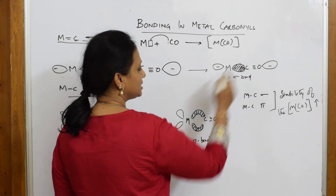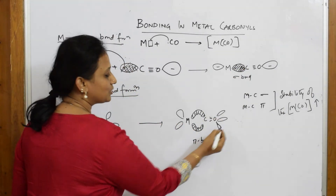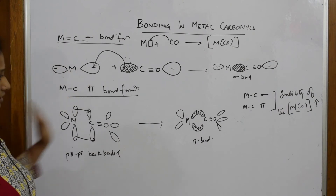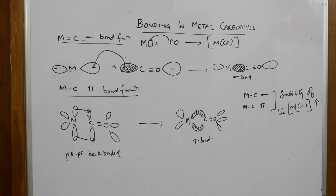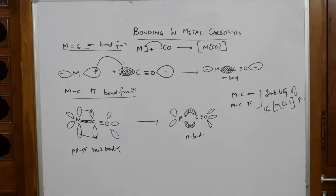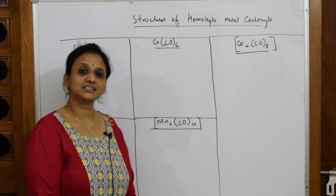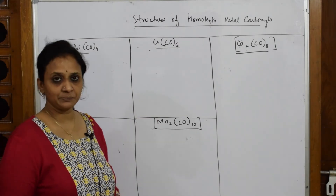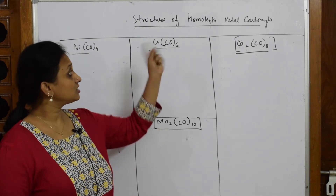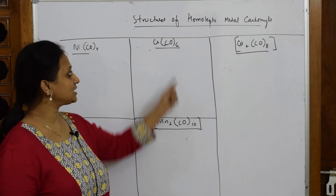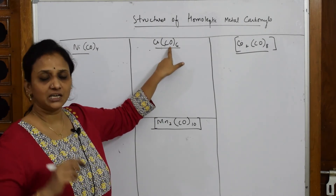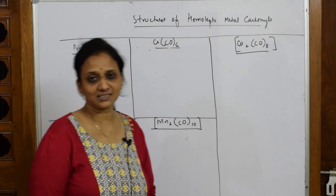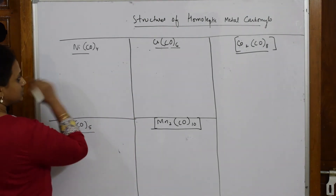When they ask you the structure of your metal carbonyl, write it in two steps and show that final concept. Now let us come back and see the structures of some of the metal carbonyls in the chapter. They may ask you to draw the structure — for example, draw the structure of homoleptic metal carbonyls. Homoleptic means the presence of only one type of ligand in the complex; if you have more than one type, it is heteroleptic. All these have only carbonyl carbon as a ligand.